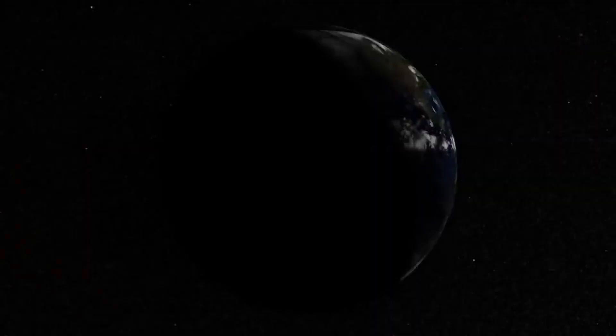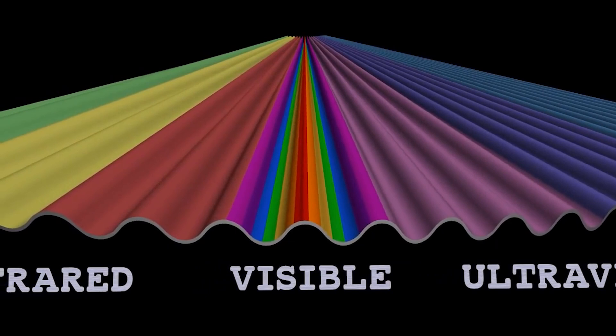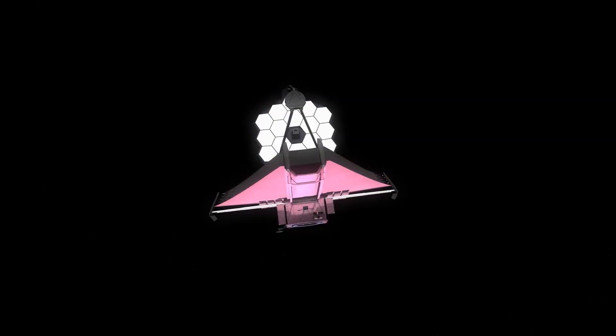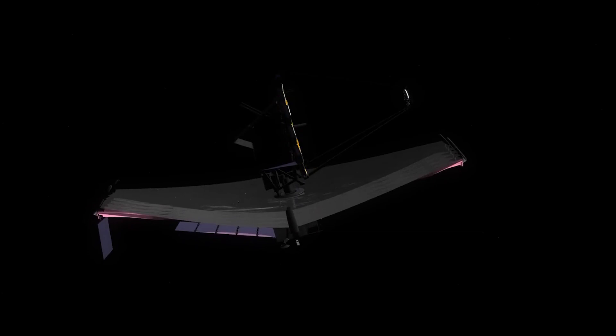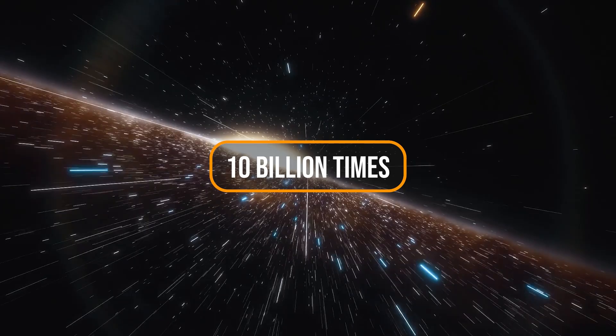Greater chances of success lie with Webb because it will use infrared light to trace and observe things in the universe. Owing to the continuous expansion of our universe, galaxies are getting pushed away from us — that's where infrared light comes into the picture. The wavelengths of infrared light are longer than those of visible light, so these can penetrate through dust clouds quite easily. Webb can trace objects that are 10 billion times fainter than faint stars visible to the naked eye.